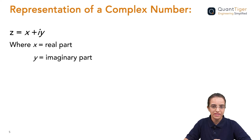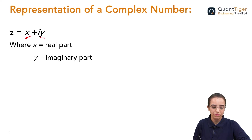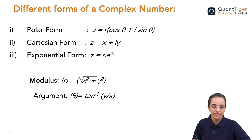Complex numbers are always represented in terms of z: z = x + iy, where x is the real part and y, coming along with i, is the imaginary part. In polar form, we write it as z = r(cosθ + i sinθ).